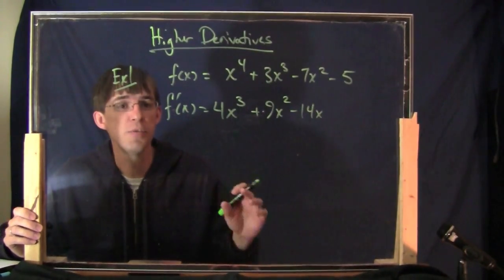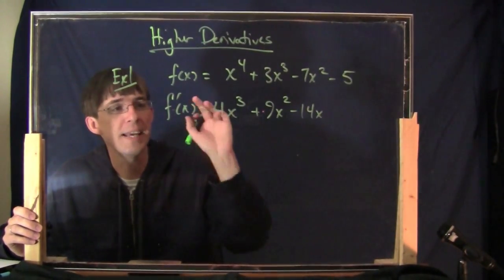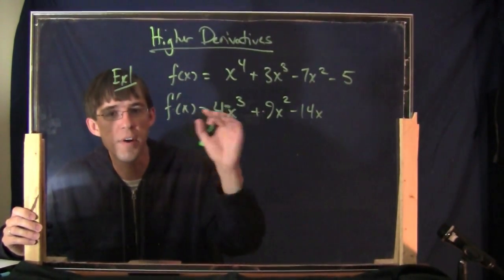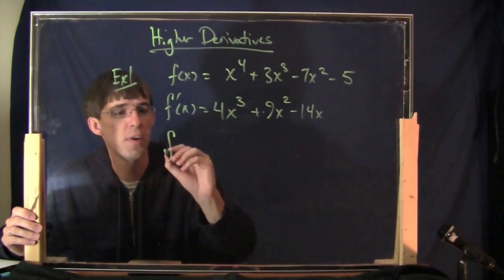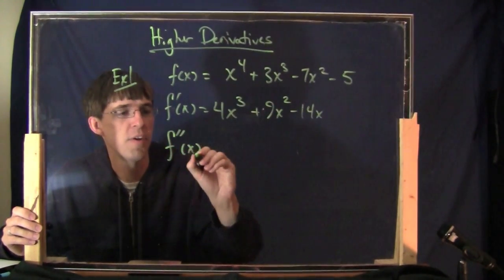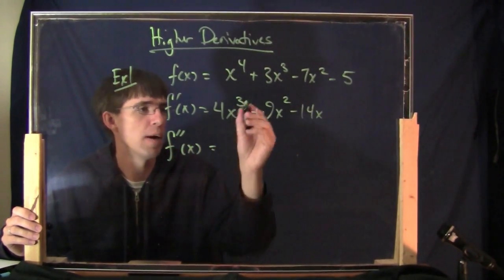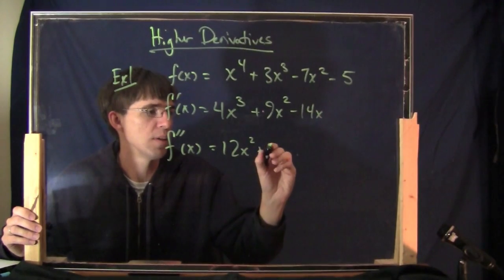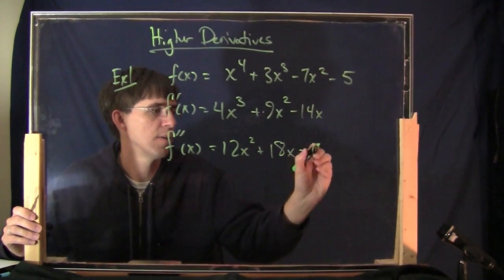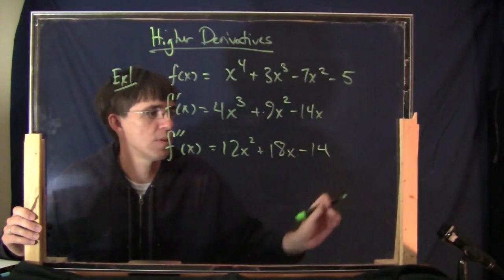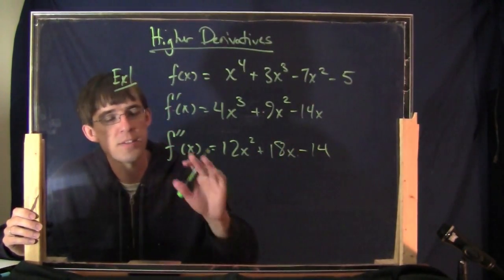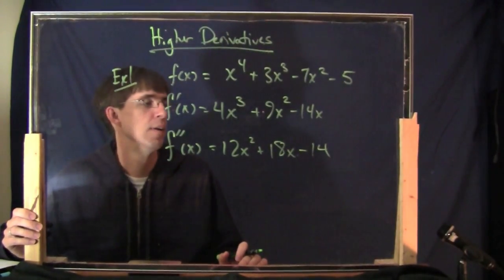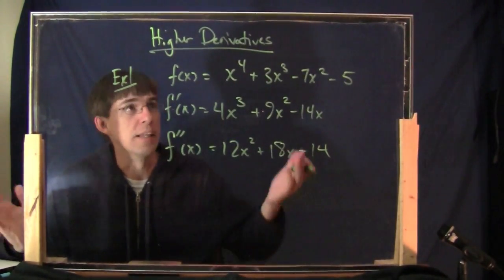What's the second derivative? The second derivative is when you take the derivative of this one. It's the derivative of the derivative. f double prime is 12x squared plus 18x minus 14 in this case. That's called the second derivative.